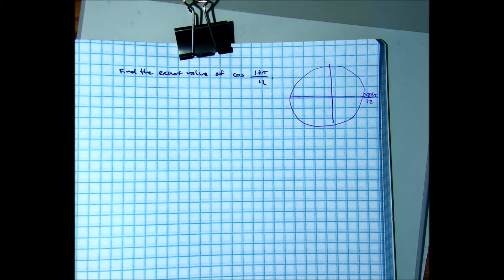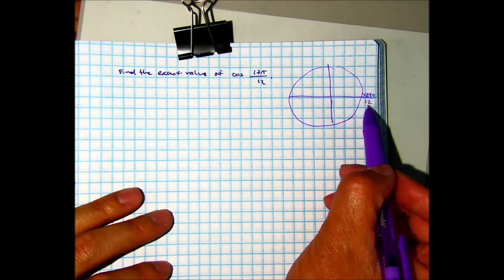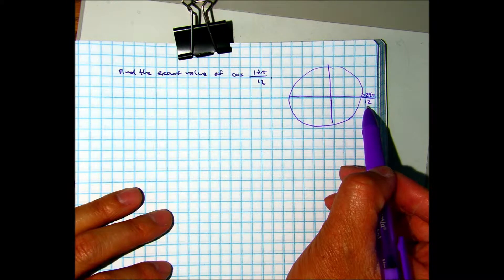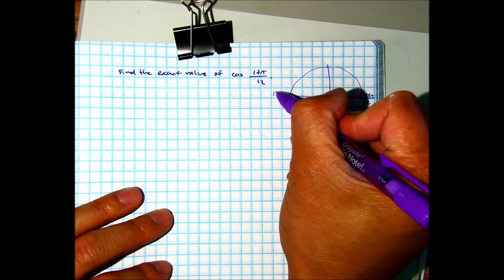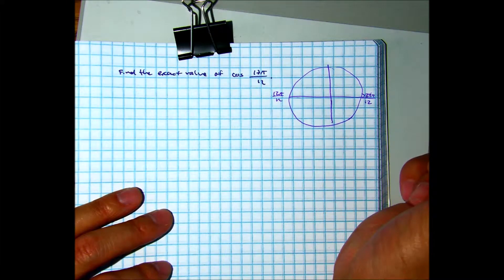Does that make sense? Yes or no? What's 24 divided by 12? Okay, so this is going to be pi. So 12 pi over 12 is just pi.